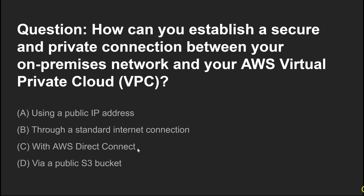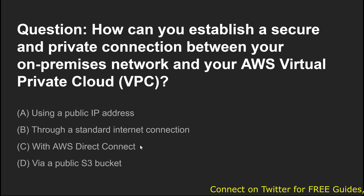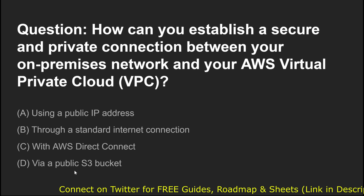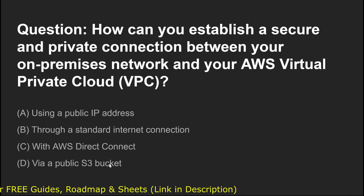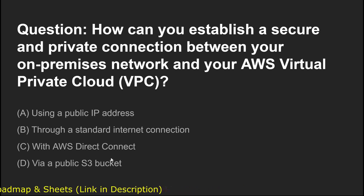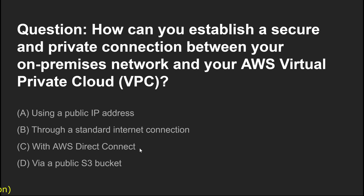There are two proper ways to connect: you can create an IPSec tunnel using VPN, or connect through AWS Direct Connect, which provides a dedicated connection between AWS cloud and your organization. A public S3 bucket is not ideal for secure connection since it is accessible by anyone. So the correct answer is option C — AWS Direct Connect — to establish a secure and private connection between your on-premises environment and AWS cloud. I hope you find this video helpful. If so, don't forget to like, share with your friends, and keep learning, keep transforming, keep growing. See you in the next video.